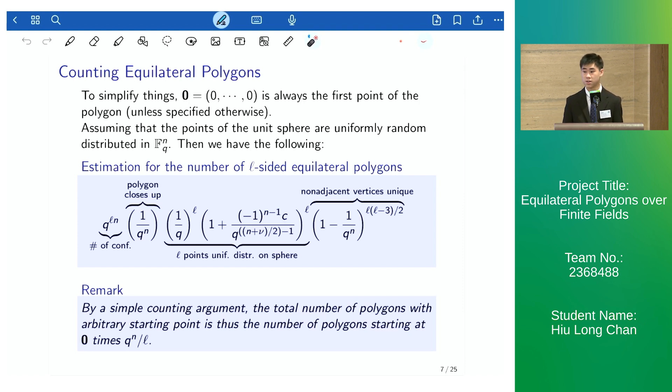By simple counting arguments, the total number of polygons starting with an arbitrary starting point is the number of polygons starting at the origin times q^n over l.